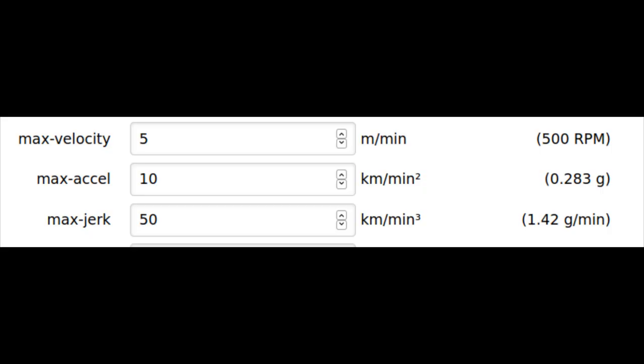Max velocity, max acceleration, and max jerk are important performance parameters. They are set for each axis on the motor configuration pages. The default values are 5 meters per minute for max velocity, 10 kilometers per minute squared for max acceleration, and 50 kilometers per minute cubed for max jerk.